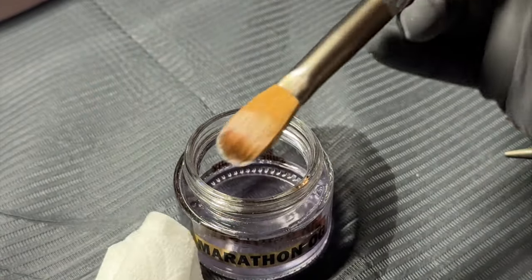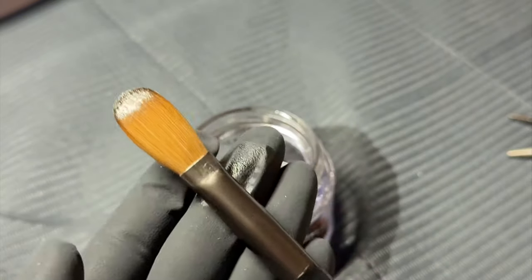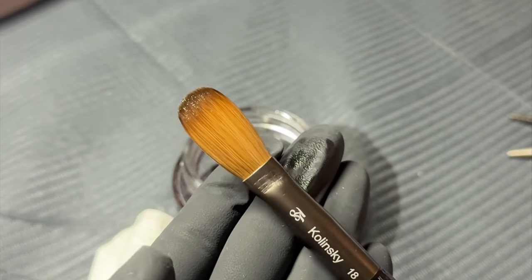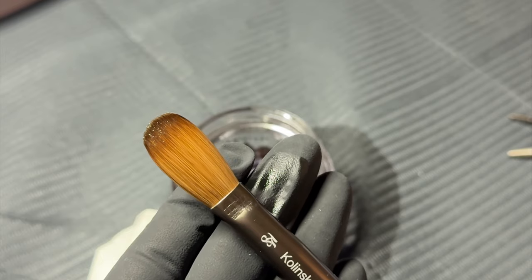Once I'm done crimping it, I dip it in my monomer again and make sure that it's real flat. As you can see, it's very very flat. If you look at it from the side, it's flat as well.